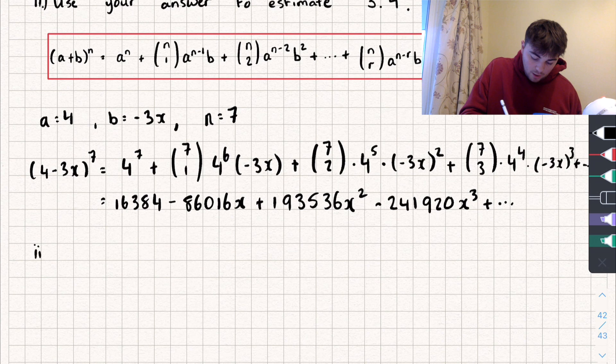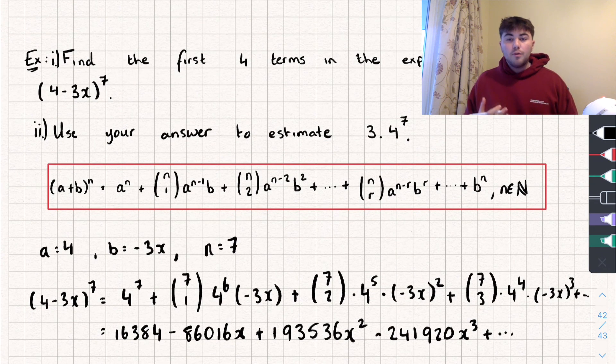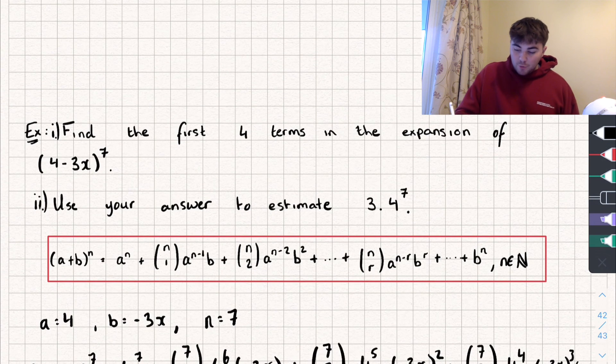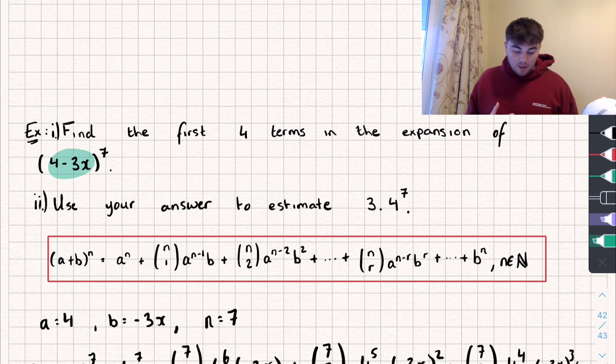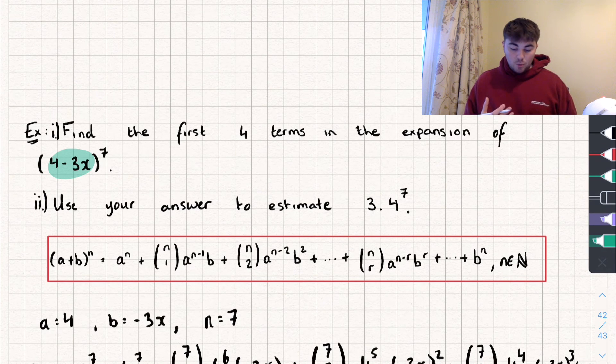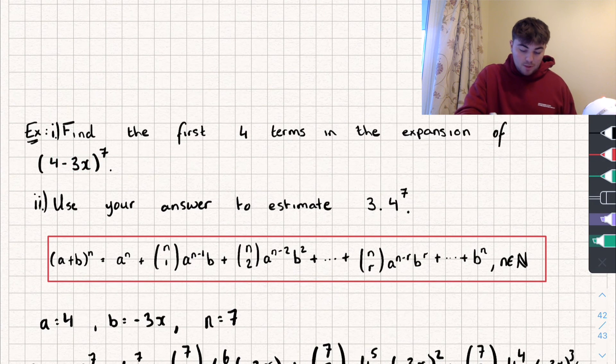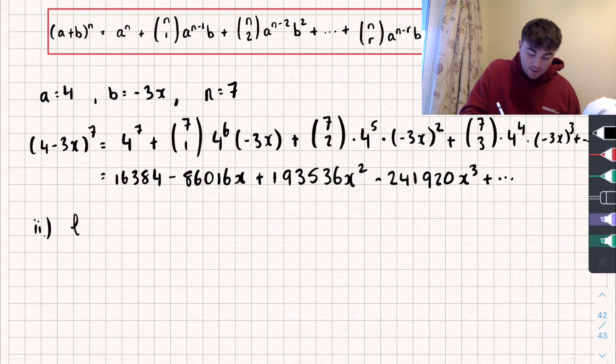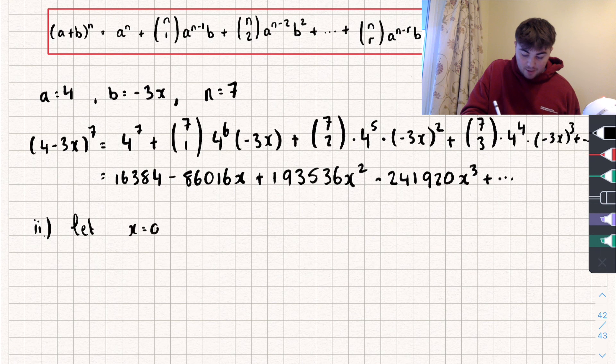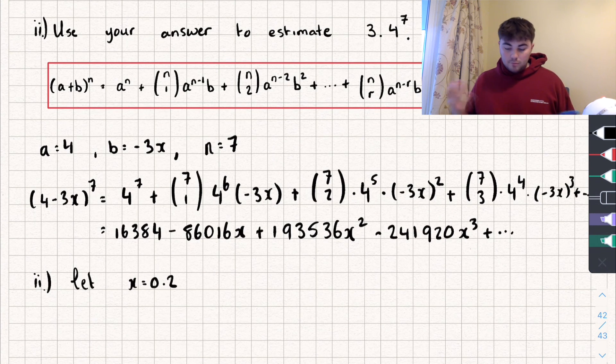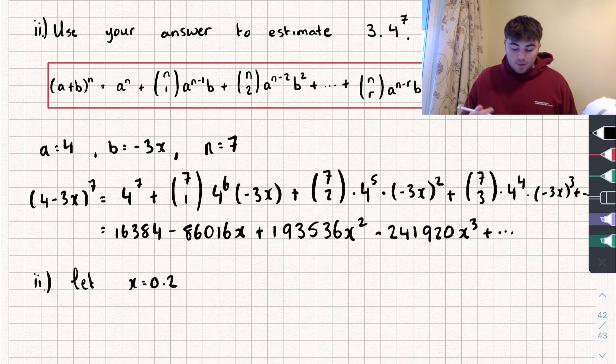The second part says use your answer to estimate 3.4 all to the power of 7. So if we take a look at what we started with, this part here, I want whatever is in the bracket to read 3.4, and it will do that if I set x equal to 0.2. Because then we have 4 minus 3 times 0.2, which is the same as 4 minus 0.6, so it's 3.4 to the power of 7. And so all you would do is say let x equal 0.2, and I'm not going to do it because it'll take me a while on my calculator. Set x equal to 0.2 and substitute it into that part there, and say it's approximately equal to 3.4 to the power of 7.